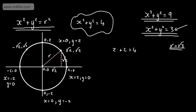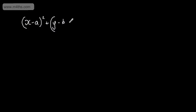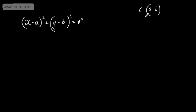We're now going to look at the equation of a circle where the center isn't at the origin. The general form for that equation is: x minus a, all squared, plus y minus b, all squared, equals r squared. This gives a circle with center (a, b) and radius r. Remember, the value on the right-hand side is the radius squared, not the radius.